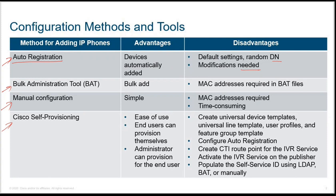Self-provisioning is when users can make configurations by themselves using the self-provisioning portal. This gives ease of use to the users, and administrators can also provision for end users. For self-provisioning, you have to create universal device templates, universal line templates, user profiles, and feature group templates, and configure auto registration. Make sure auto registration is enabled. Create a CTI route point for IVR services if needed, activate IVR services on the publisher, and populate the self-service ID using LDAP, BAT, or manual methods.